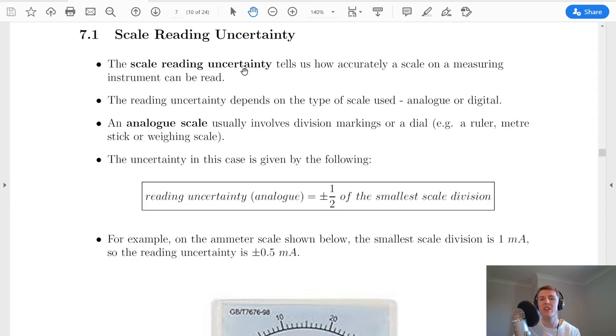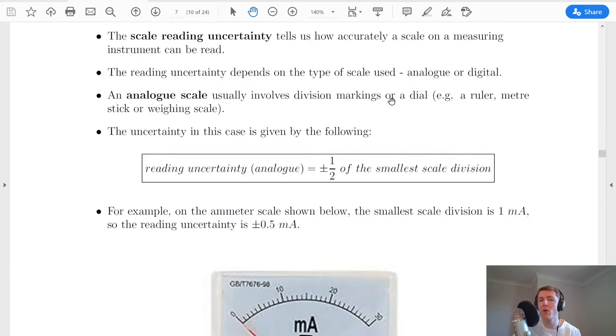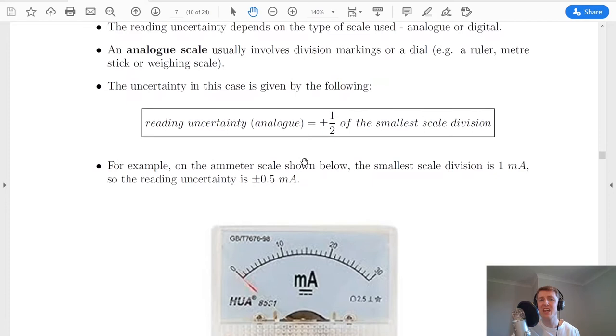Moving on to the first type of uncertainty then, the scale reading uncertainty tells us how accurately a scale on a measuring instrument can be read. The reading uncertainty depends on the type of scale used however, whether it's analogue or digital. An analogue scale usually involves division markings or a dial, for example a ruler, a metre stick, or a weighing scale.